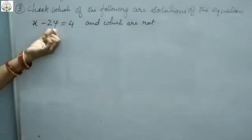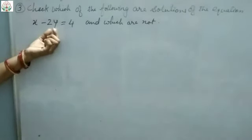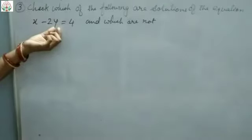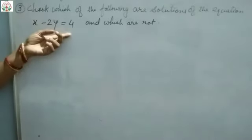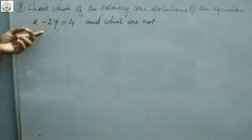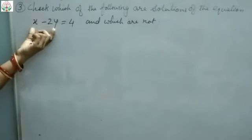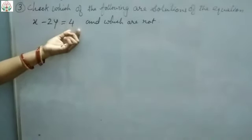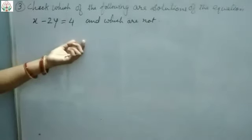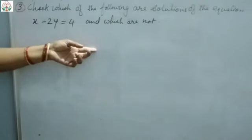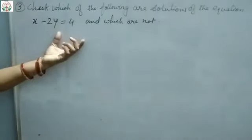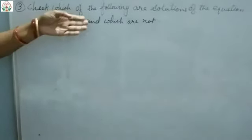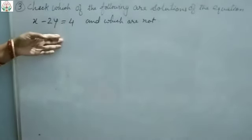x and y values are given in the following conditions. We will put those values of x and y into this particular equation and check whether the left-hand side value equals the right-hand side value. If it comes out the same, then it is true. If it does not come out the same, then it is not the solution for this particular linear equation.